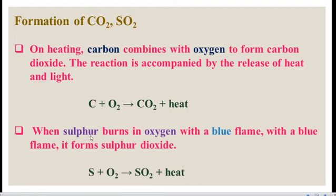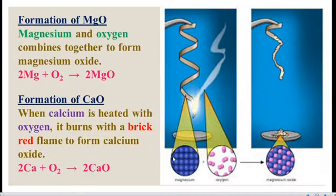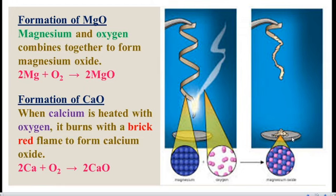Generally, metals and non-metals combine with oxygen and burn with a colored flame. Sulfur burns in oxygen and produces a blue colored flame, forming sulfur dioxide. These are a few examples of combination reaction. Here we have taken metals — magnesium and calcium. Magnesium and oxygen combine together to form magnesium oxide. Magnesium ribbon burns with oxygen and produces a white powder, magnesium oxide. Two substances combine and produce a new substance, therefore it is a combination reaction.